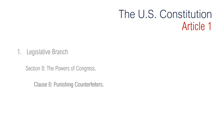Section 8, Clause 6 is regarding punishing counterfeiters. It says that Congress has the power to punish those who copy American currency and pass it off for real — otherwise known as counterfeit money. Currently, the penalty may be either imprisonment for up to 15 years plus fines, or fines. Clause 7, about roads and post offices, says that post roads include all routes over which mail is carried, including highways, railways, waterways, and airways.